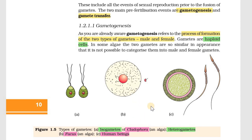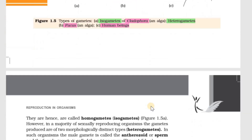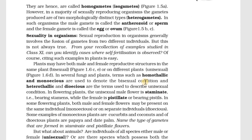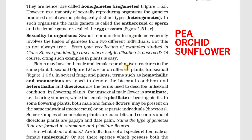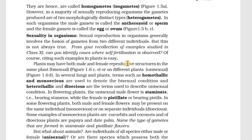In sexual reproduction, male gametes and female gametes are fused, usually from different individuals. But this is not always the case. Sometimes the same individual produces both female and male gametes which then fuse – this is called self-fertilization. Examples we studied in Plus One include peas, orchids, sunflower, etc.